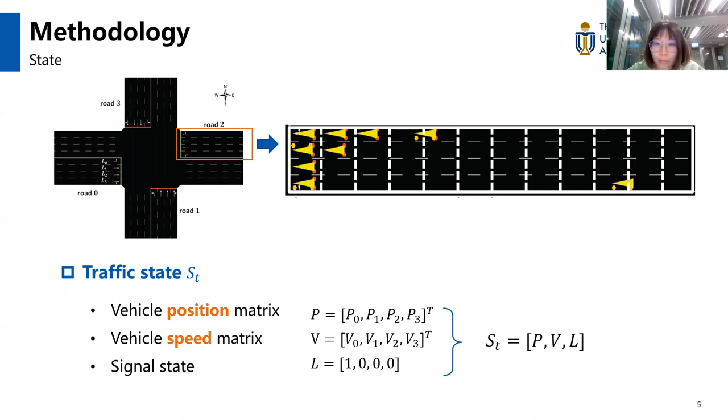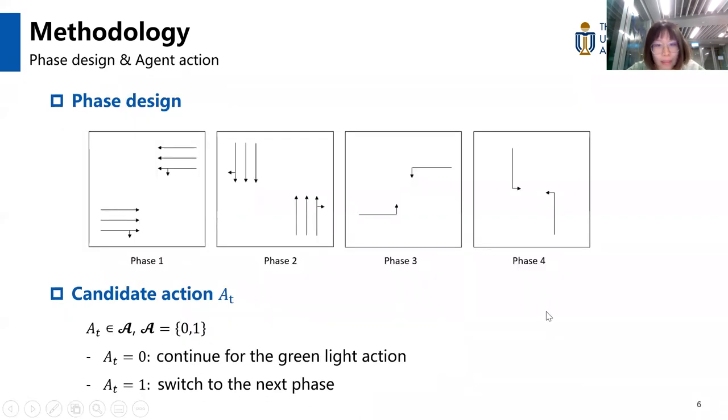We denote the position information in each road by a 4 by N matrix P, similarly for the speed matrix V. Moreover, we use a vector L to represent the state of the signal. It has four choices, and the agent can only choose between four action combinations. For example, turn on the green lights for south to north road with the first element set to be one. Detailed representation can be seen in the report. Four phases are predefined, as depicted here.